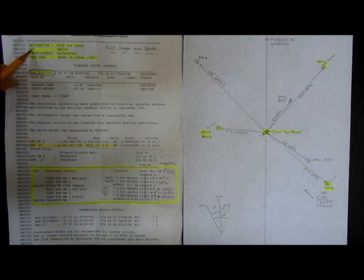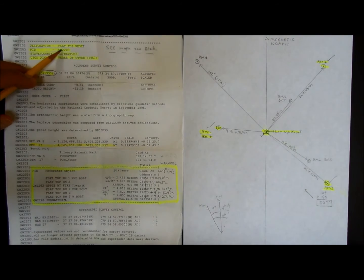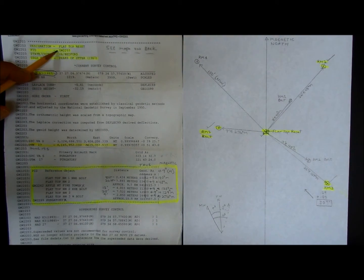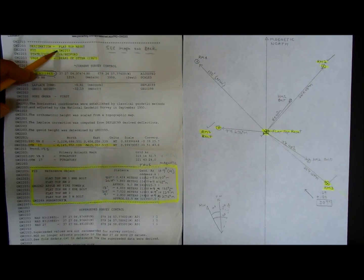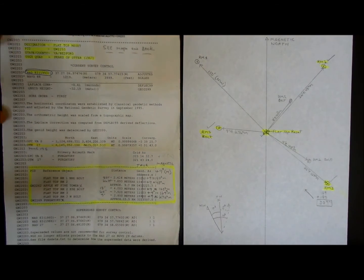The PID is the point ID GW2203. This is what you would punch in on, for example, the geocaching website. There's a benchmark database. If you punch in GW2203, it will pull up this data sheet.